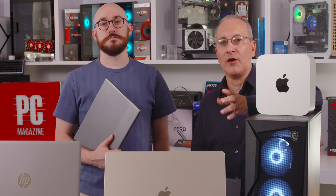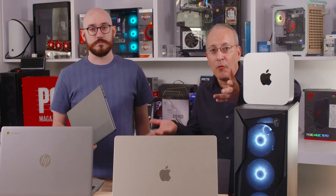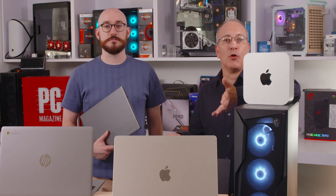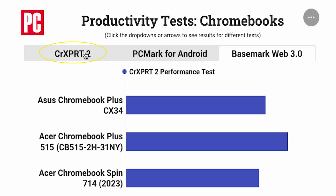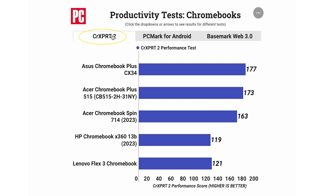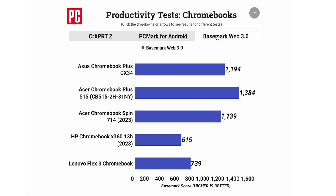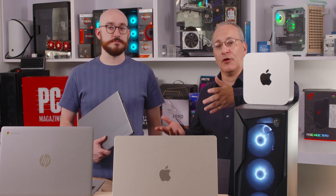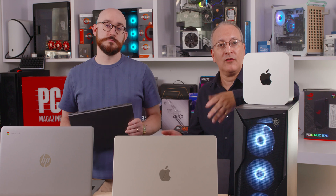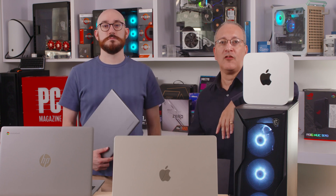Next, we have Chromebooks, which are pretty different from both Windows and Mac systems. Chrome OS is a browser-first platform, so testing Chromebooks requires a unique set of tools. For Chromebooks, we rely on Chrome-specific tests like CrExpert 2 and Basemark Web. CrExpert 2 measures how well a Chromebook handles common computing tasks like photo editing, finding faces in images, and calculating stock portfolio views. Basemark Web tests how well a Chromebook runs browser-based apps, from JavaScript performance to WebGL graphics. We also run some Android-based tests including Geekbench for Android, Graphicsbench for graphics, and PCMark Work 3.0.